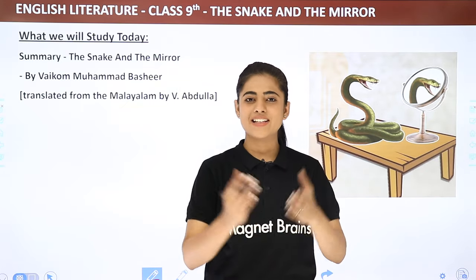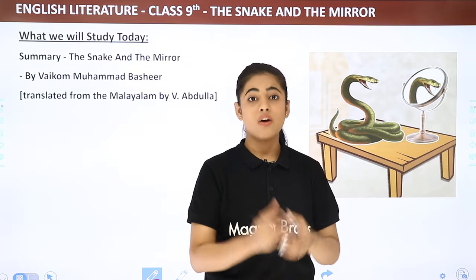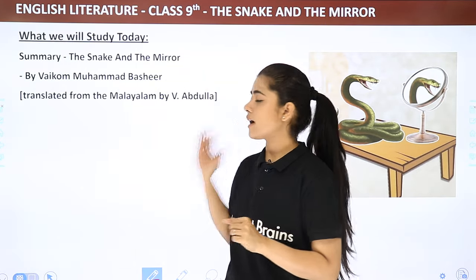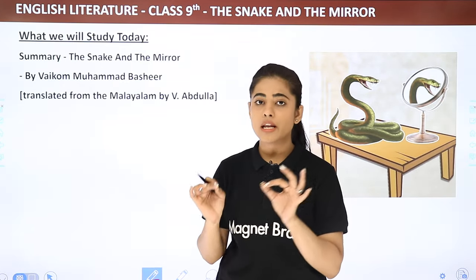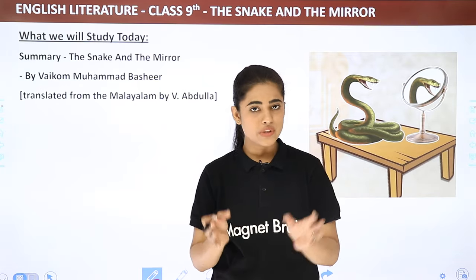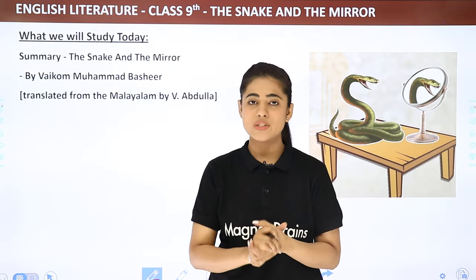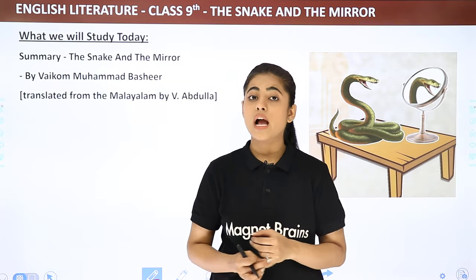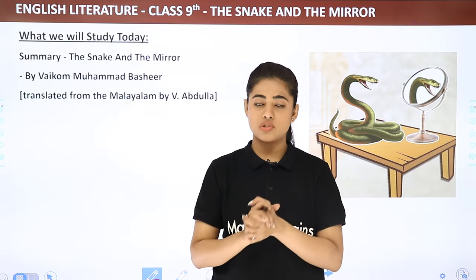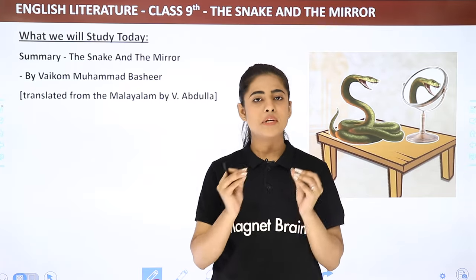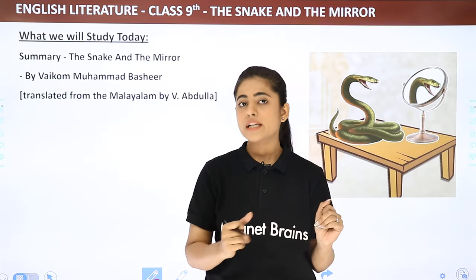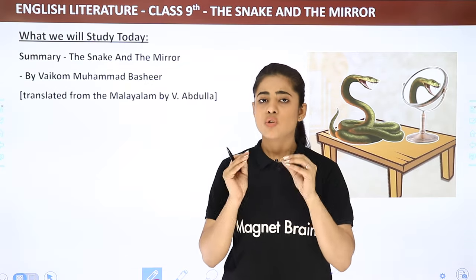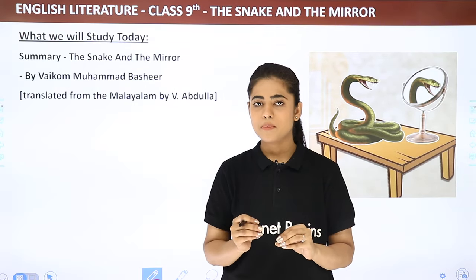Hey everyone, this is Chandni Dinani welcoming you to Magnet Brains. We are discussing Chapter 5, 'The Snake and the Mirror'. We have seen the line-by-line explanation of the complete story in the previous two videos, so I hope that is clear. Now we have to see the complete summary of this chapter so that you get the complete overview in one go and get some help writing your answers.